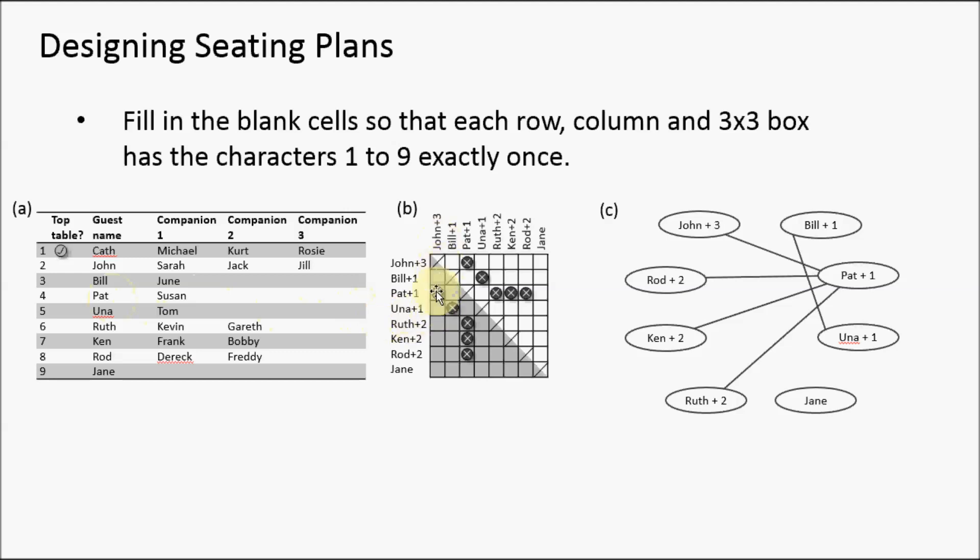Pat, for example, doesn't get on with John; Una doesn't get on with Bill, and so on. We would like those people to be sat at different tables if possible. How many tables do we need to make sure all those constraints are met?